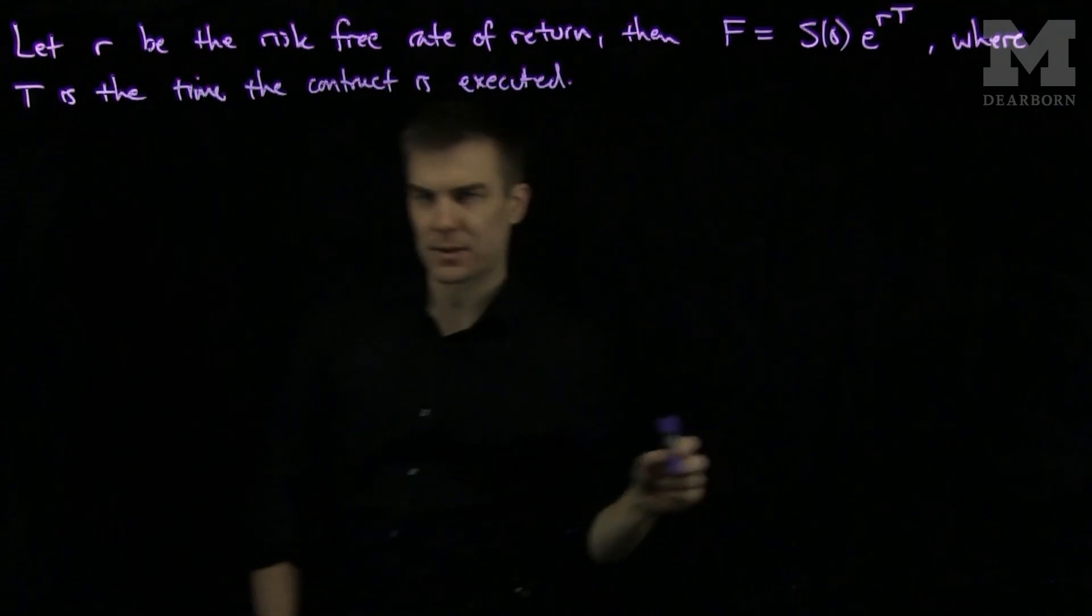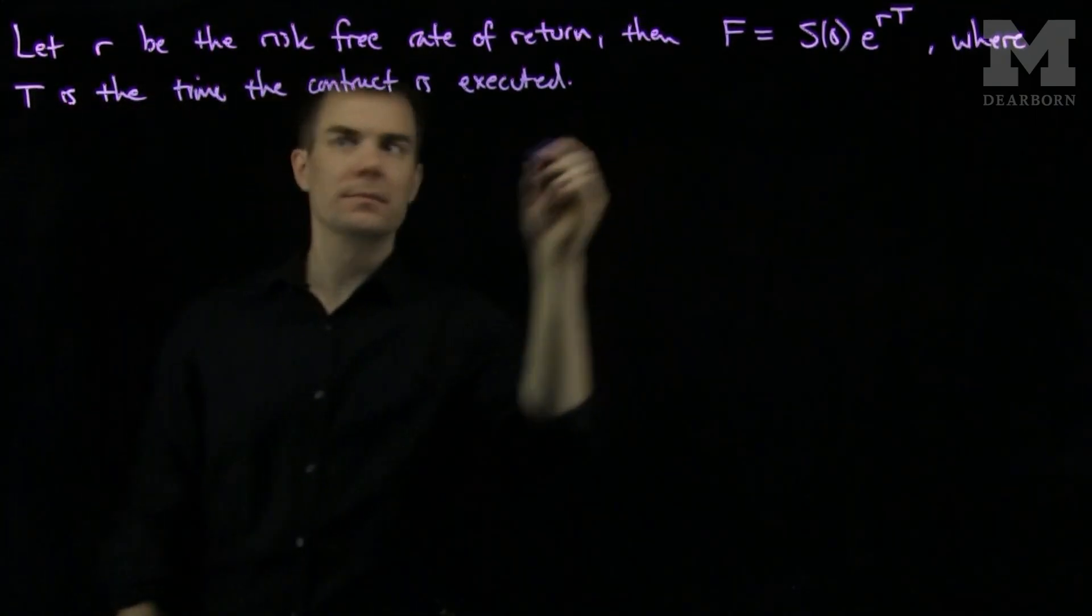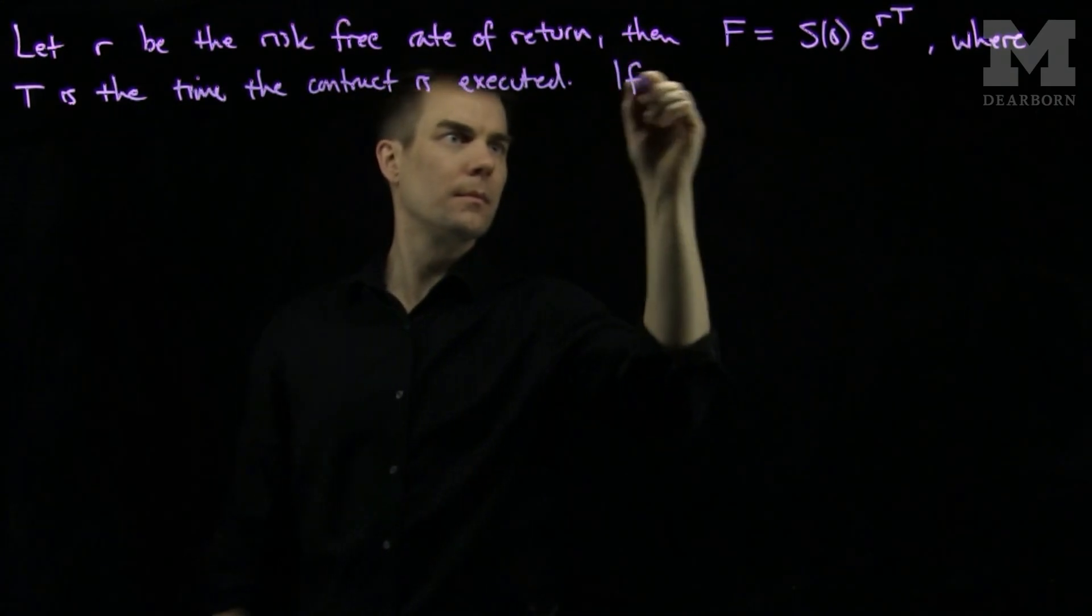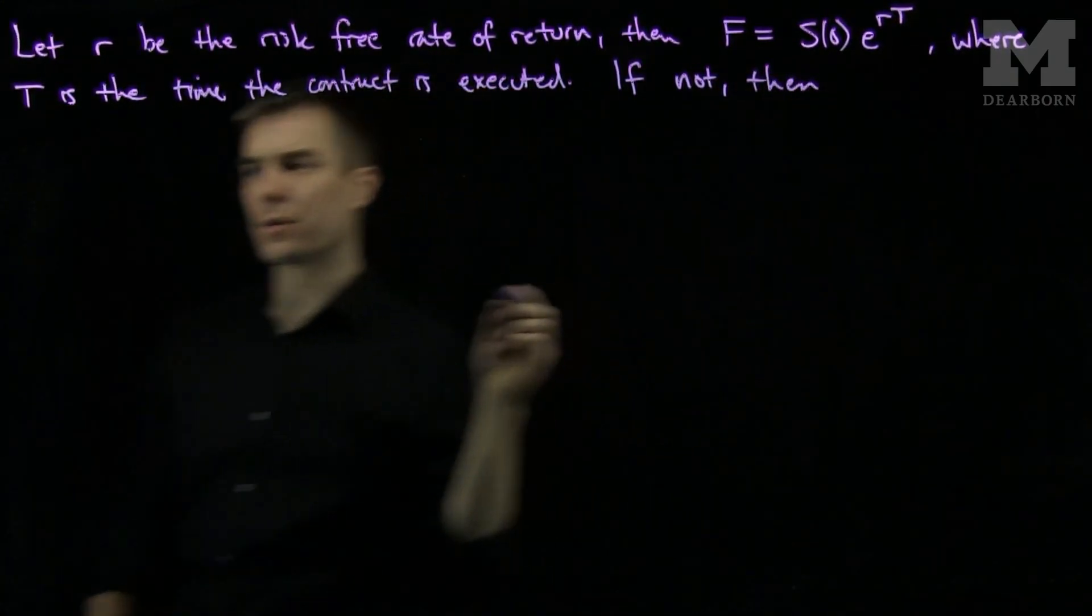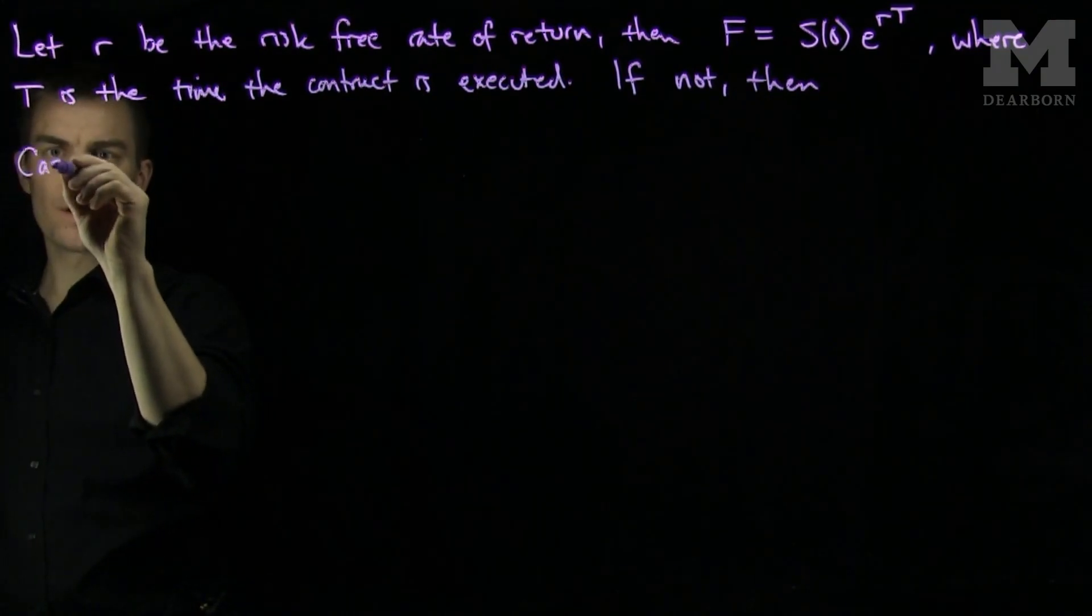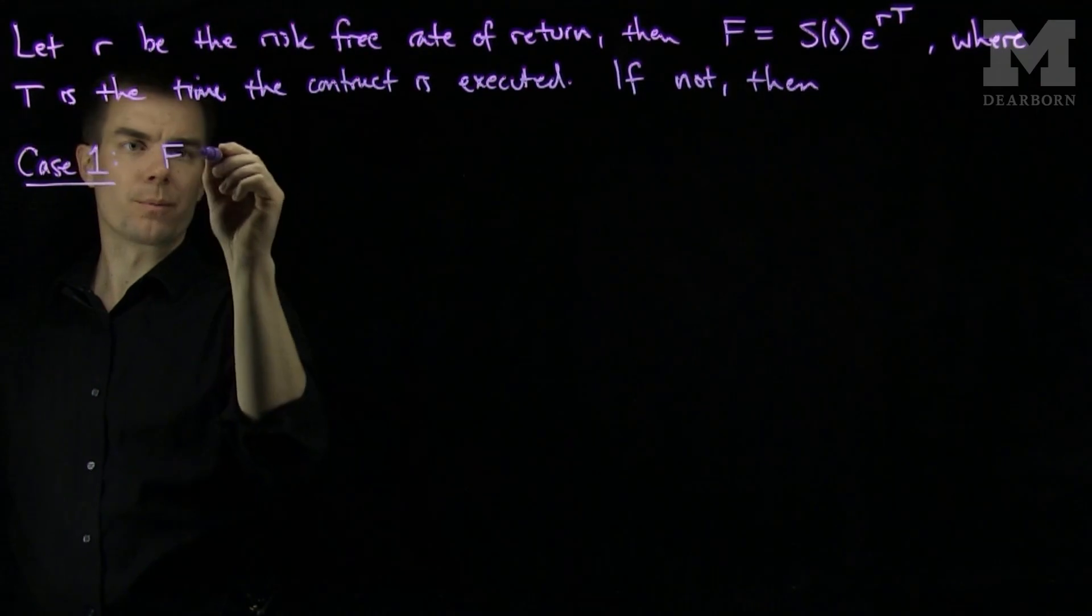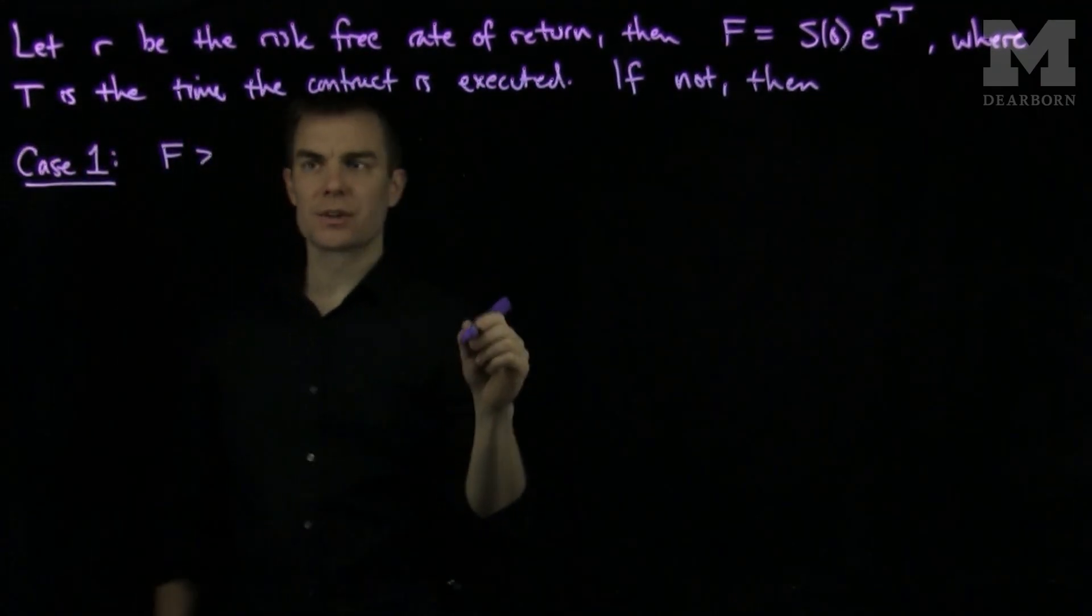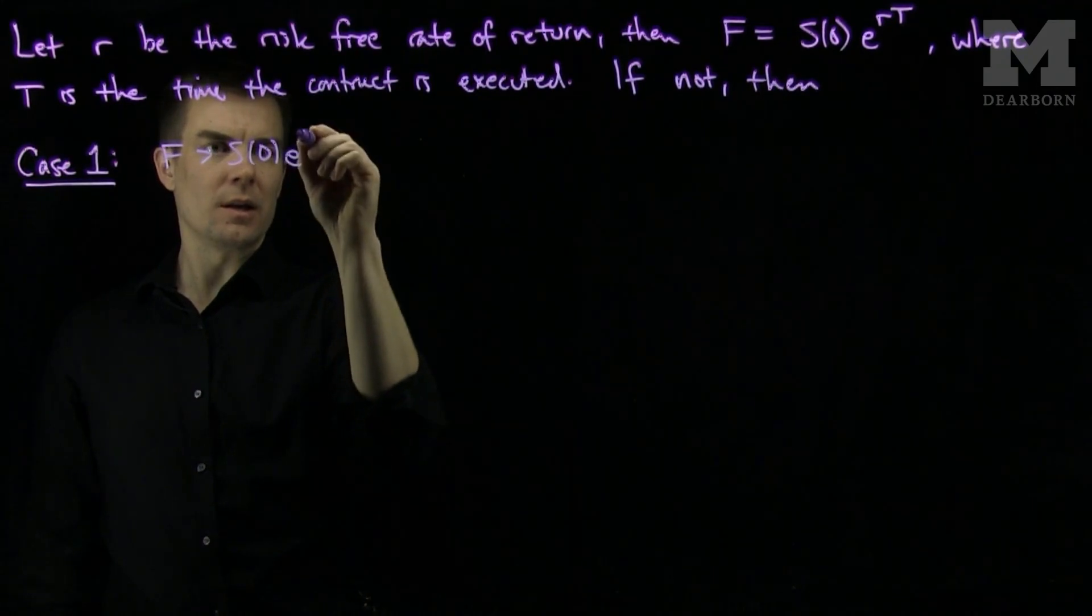Let's see why this is the case. If not, then there are two cases. Case 1 would say that the forward price of the contract is larger than S0 times e to the RT.